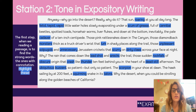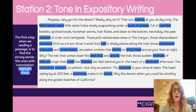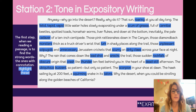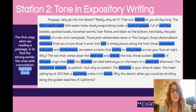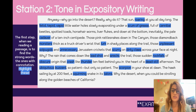Why? The rain that comes down like lead shot and wrecks the trail. Those sudden rock falls of obscure origin that crash like thunder 10 feet behind you in the heart of a dead, still afternoon. The ubiquitous buzzard — so patient, but only so patient. The scorpion in your shoe at dawn, the hawk sailing by at 200 feet, a squirming snake in its talons. Why the desert when you could be strolling along the golden beaches of California?